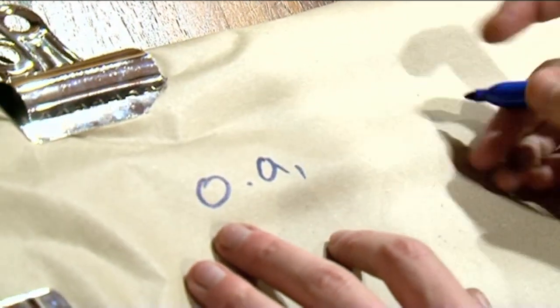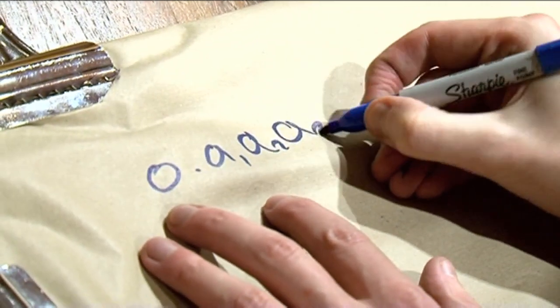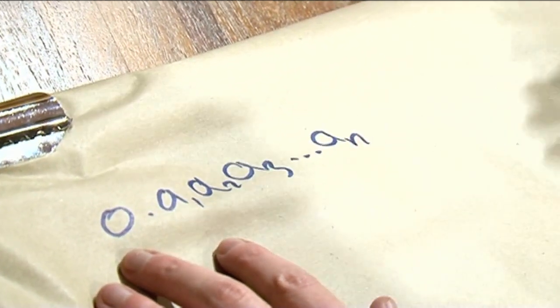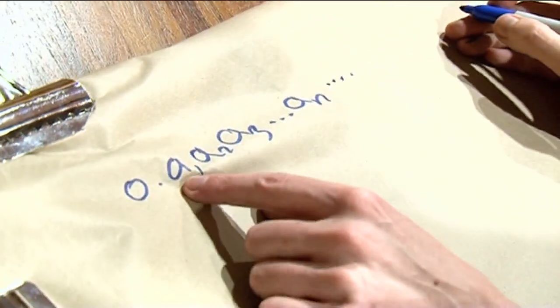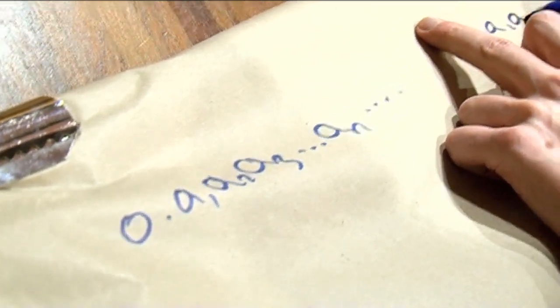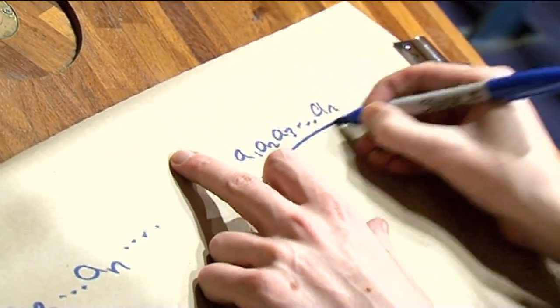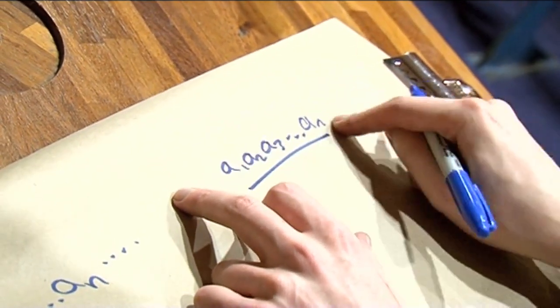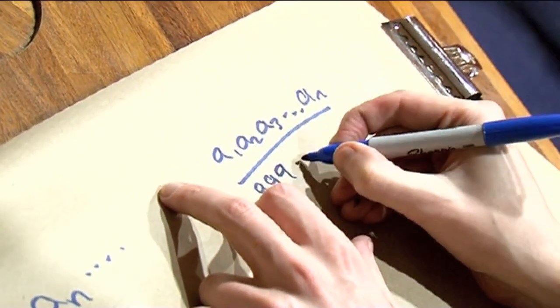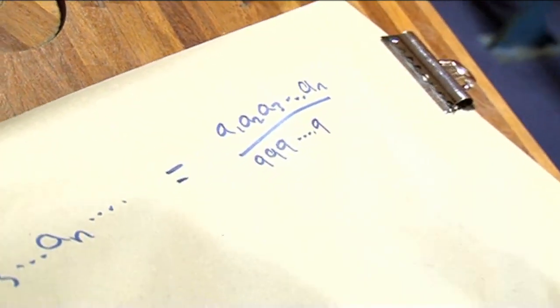The easiest explanation is that you can make any repeating decimal you want. If you have a decimal 0.A1 A2 A3 ... An repeating, with n digits, all you have to do is take that sequence A1 A2 A3 up to An and divide it by the same number of nines — n nines. Those two things are equal.